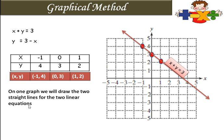On one graph we will draw two straight lines for the two linear equations. When we represent simultaneous equations on the graph, we draw both equations as two lines on the same graph.